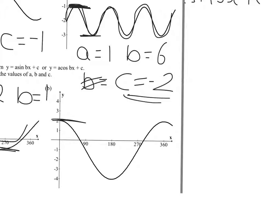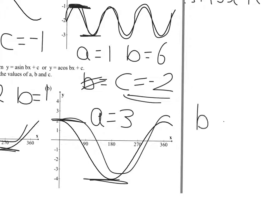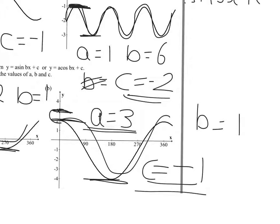The curve goes up to 2, down to minus 4. That's a total height of 6. Half that to get the amplitude of 3. There's 1 curve in 360 degrees, so B is equal to 1. The curve should go up to its amplitude of 3, but it only goes up to 2. Therefore, it's been moved down 1 unit, and C is equal to minus 1.